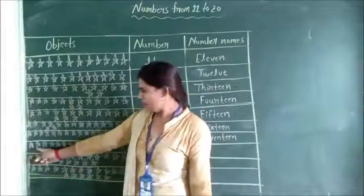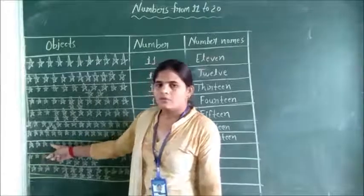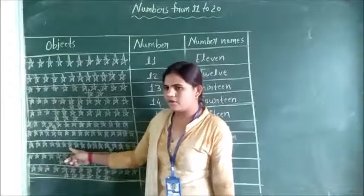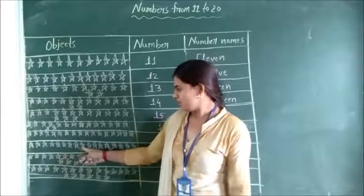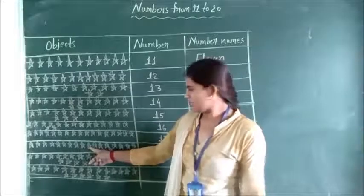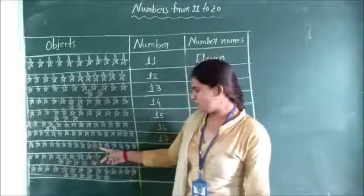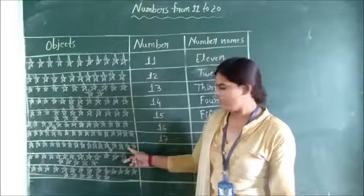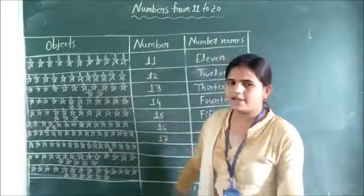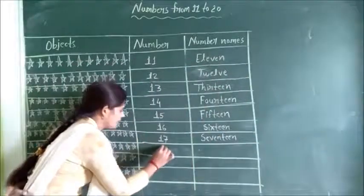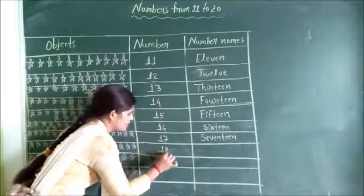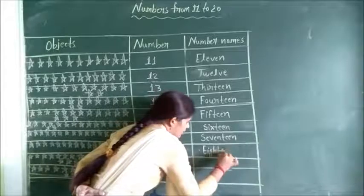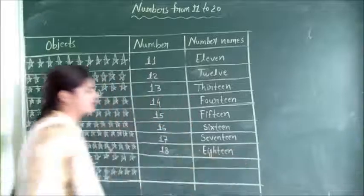Count: 1, 2, 3, 4, 5, 6, 7, 8, 9, 10, 11, 12, 13, 14, 15, 16, 17, 18. Okay, let's write it. 18. E, I, G, H, T, E, E, N. Eighteen. 18.